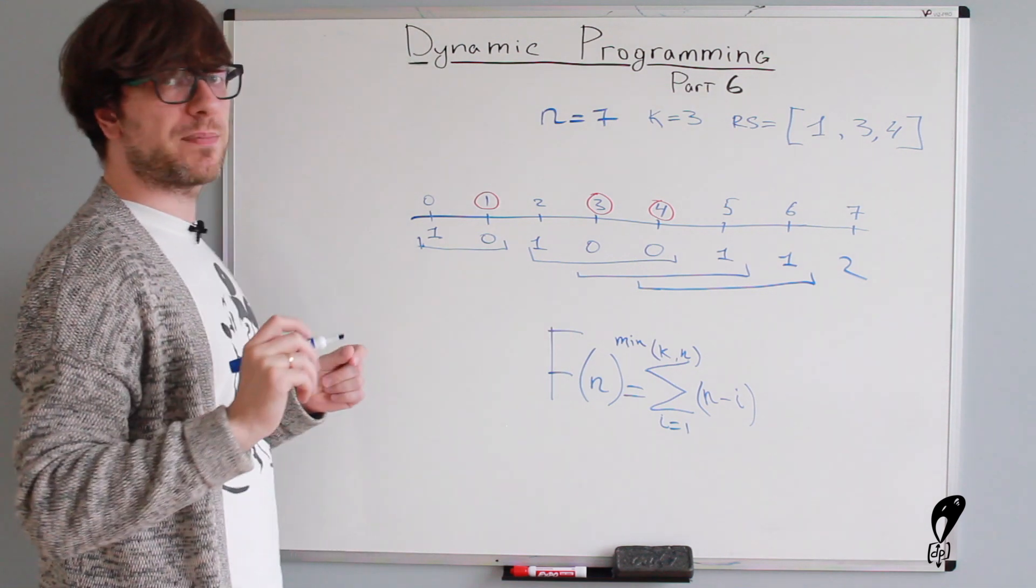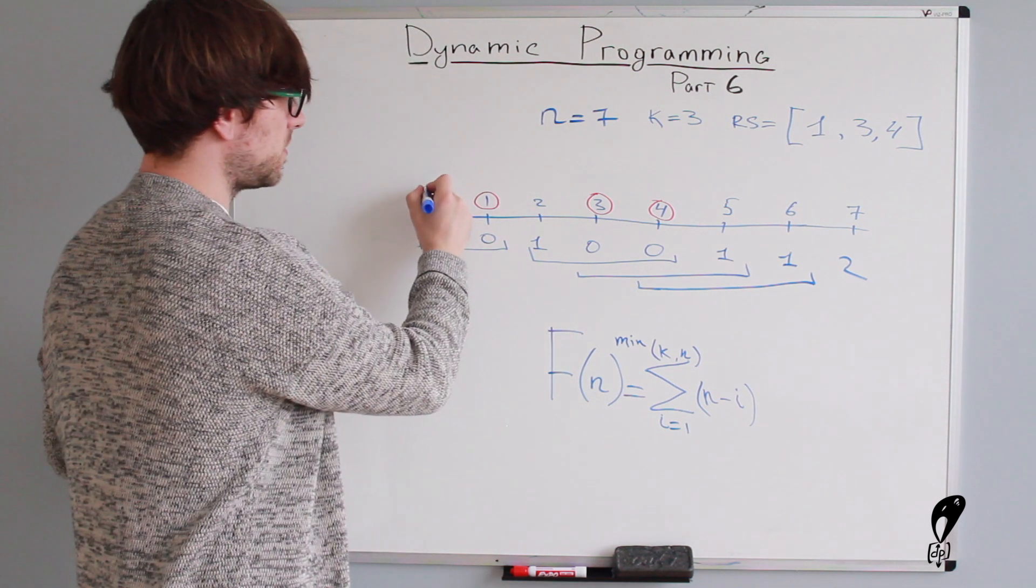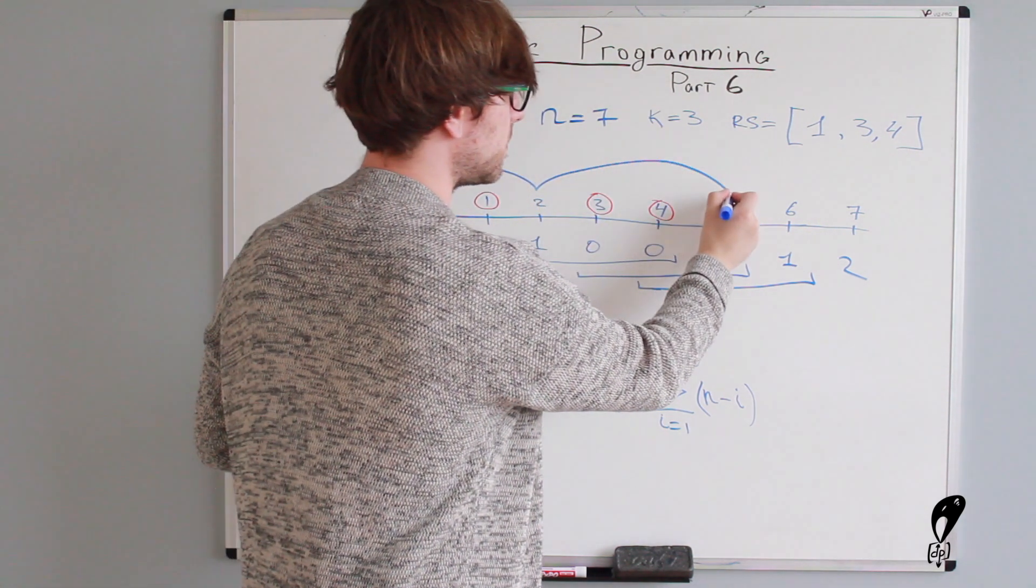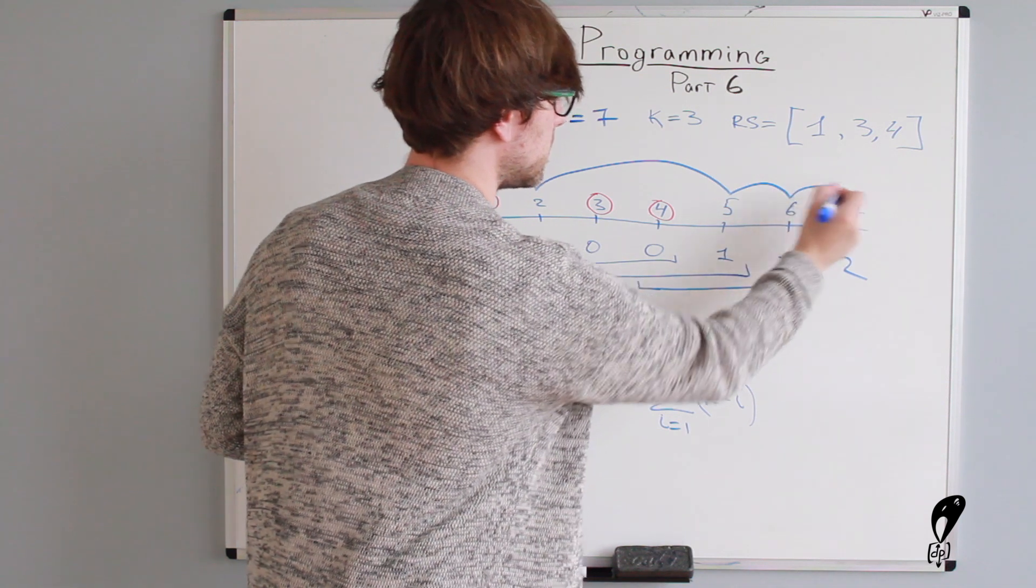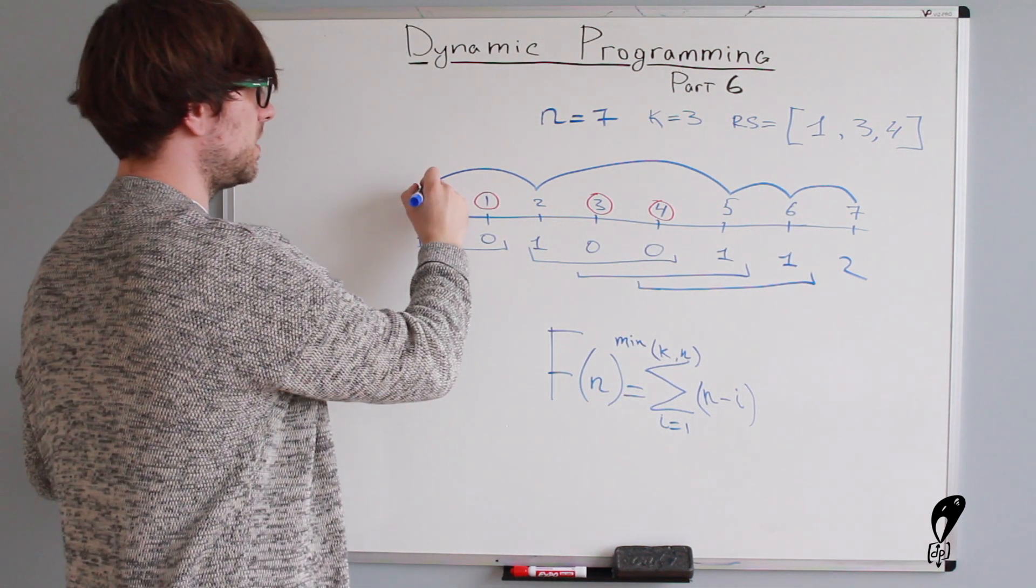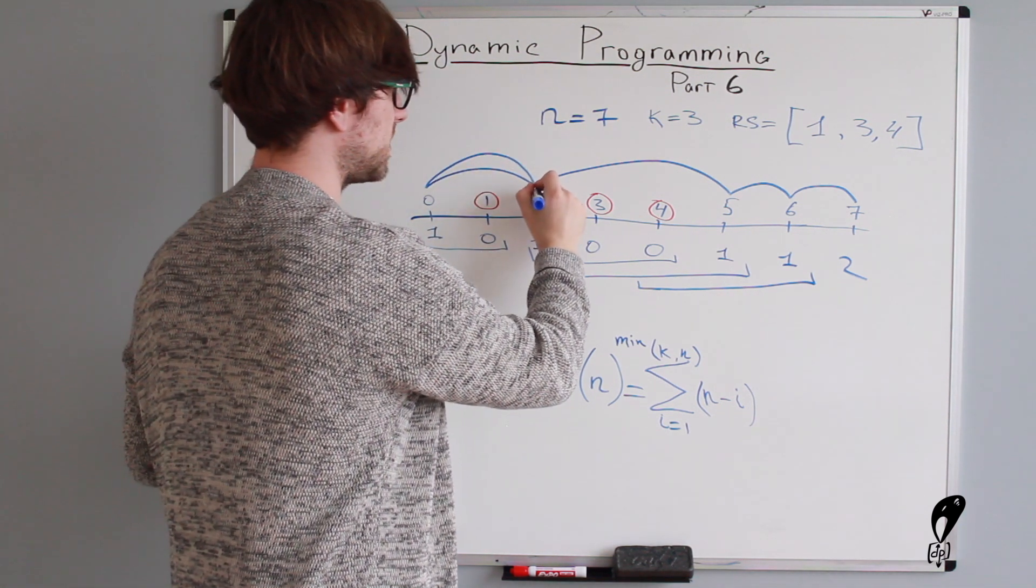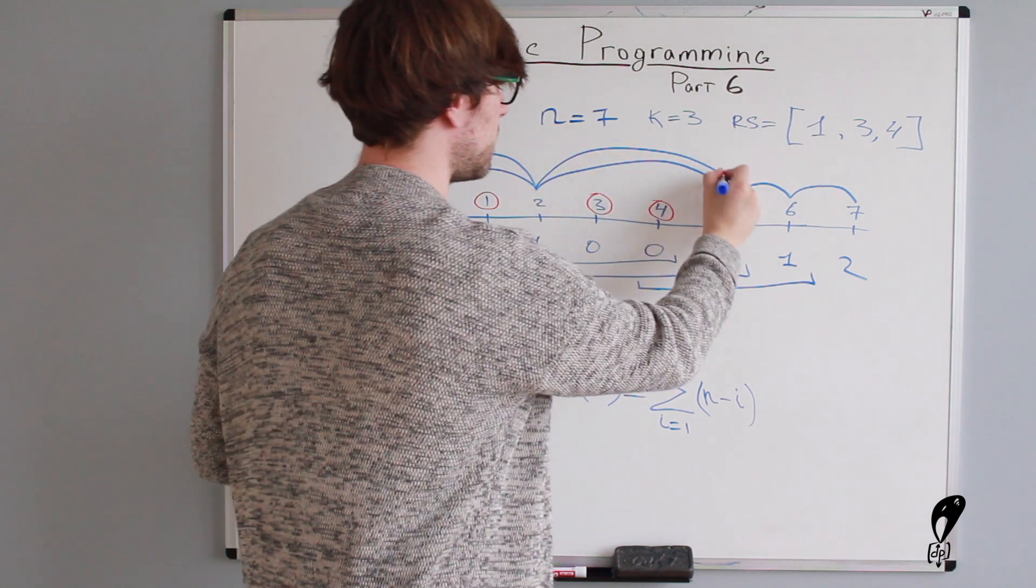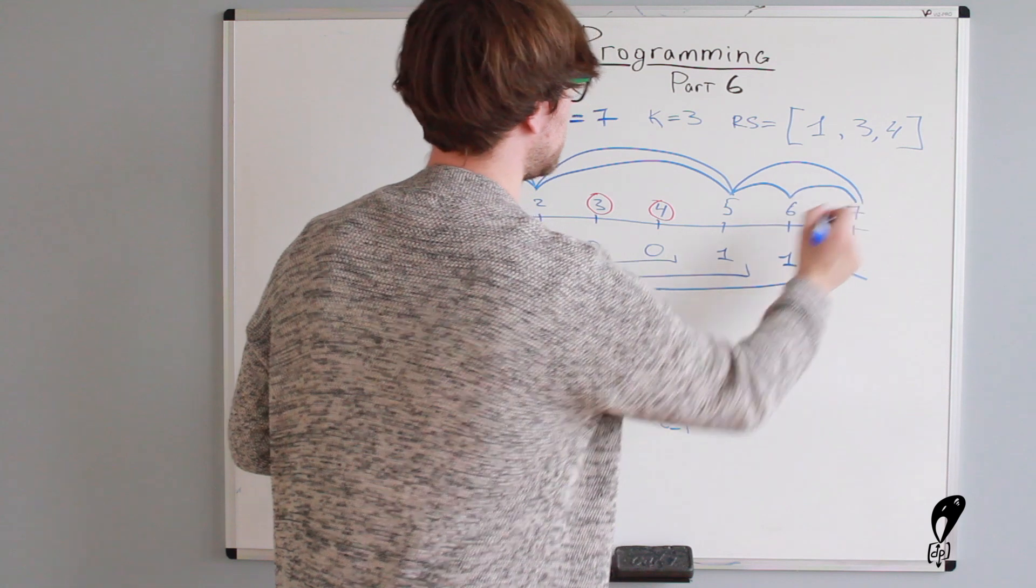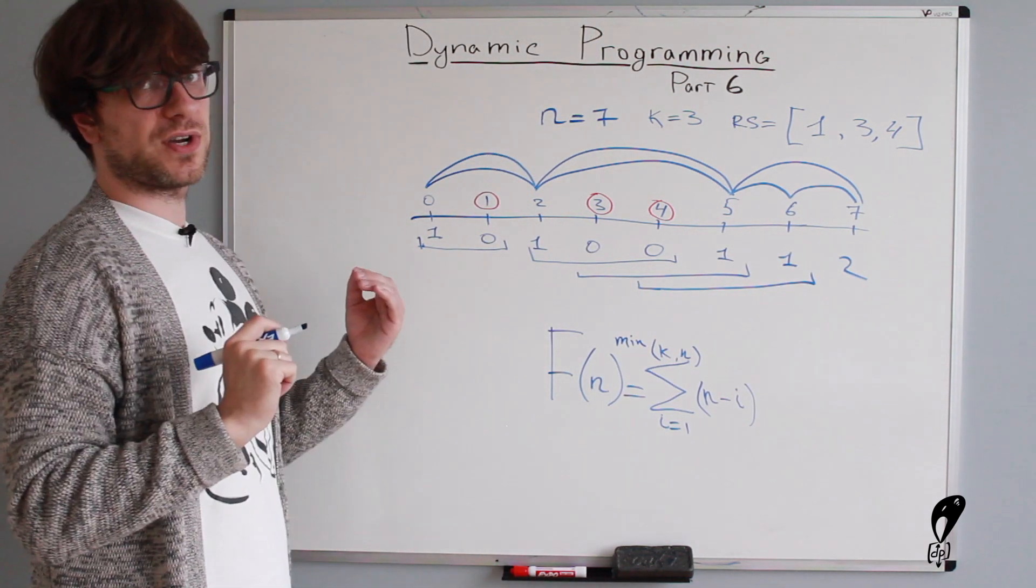So let's see if this is correct. We have two ways to reach the top of the staircase. So the first, this is the first route. And then the second route would be from the ground, we go to the second step. And then from the second, we go to the fifth. And then from the fifth, we go to the top. So yes, this is correct. We have two ways to reach the top of the staircase.